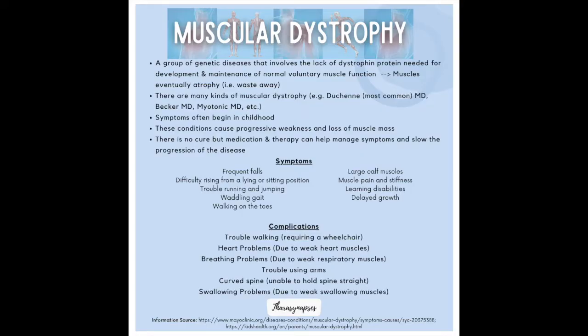I try to keep it simple because things can get quite complicated in these explanations. Becker's Muscular Dystrophy is a rare genetic disorder which causes progressive muscle weakness. To give some context: muscular dystrophy is actually a group of genetic diseases that involve a protein called dystrophin. In these conditions, dystrophin is missing, so the development and maintenance of normal voluntary muscle function is impaired, and that eventually leads to muscle atrophy — essentially, the muscle is wasting away.